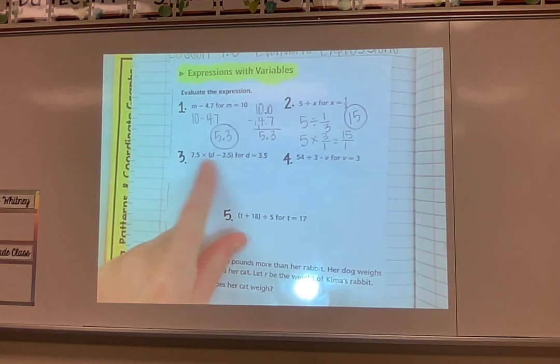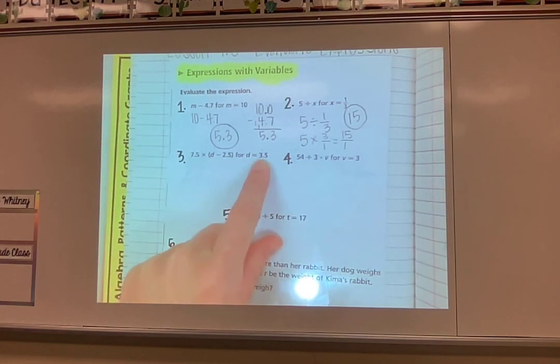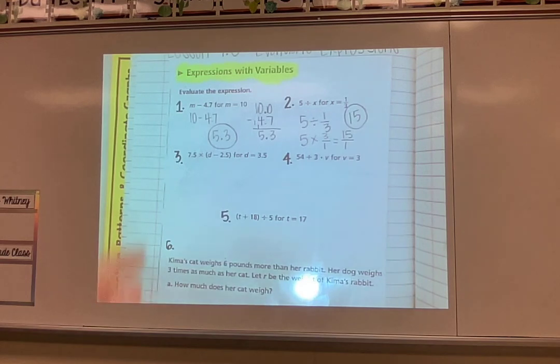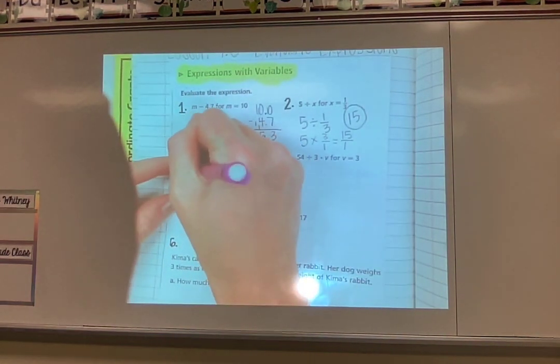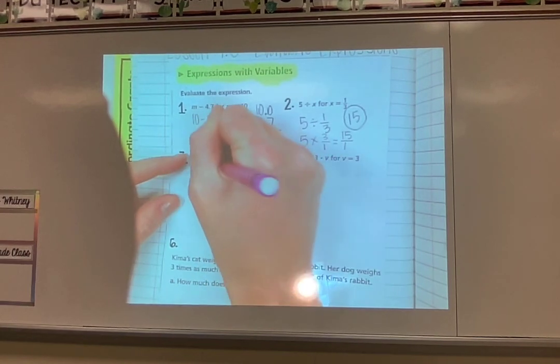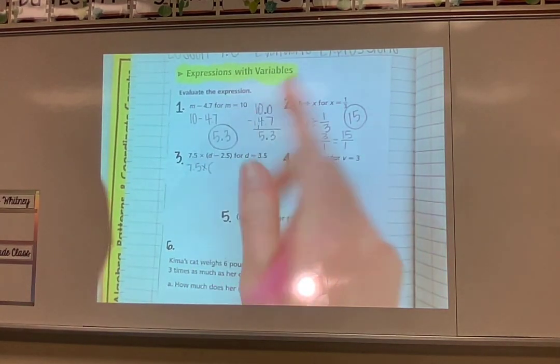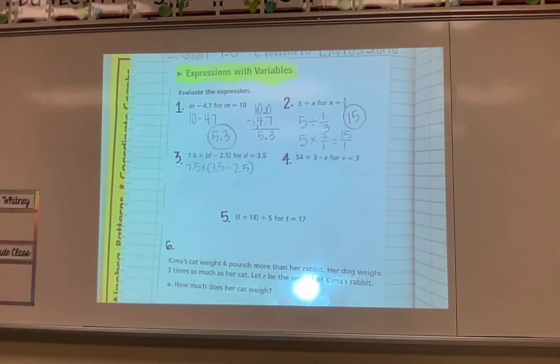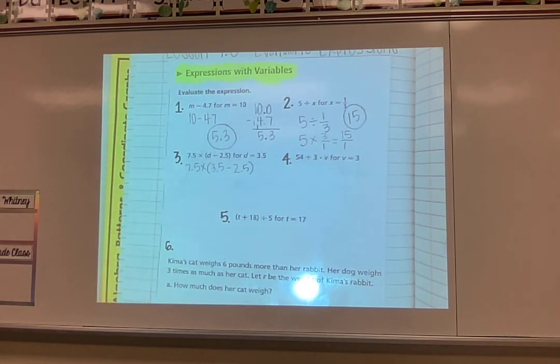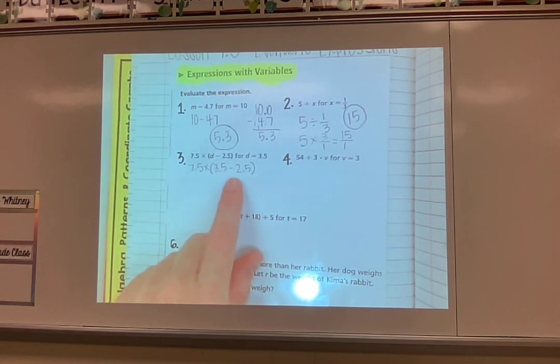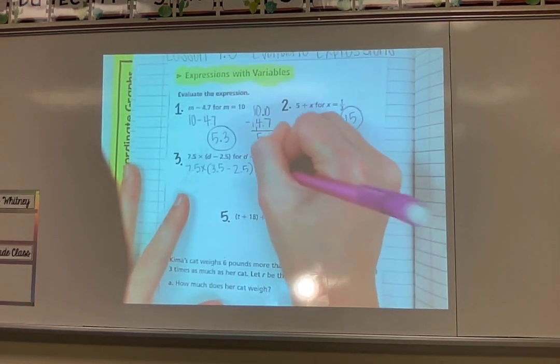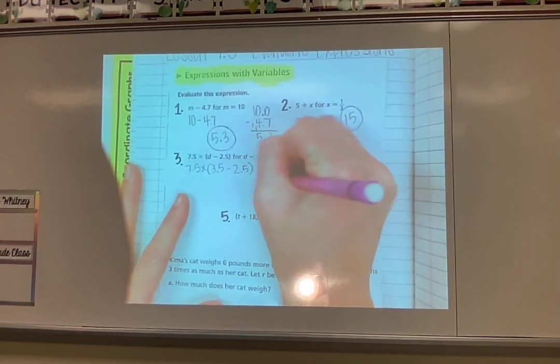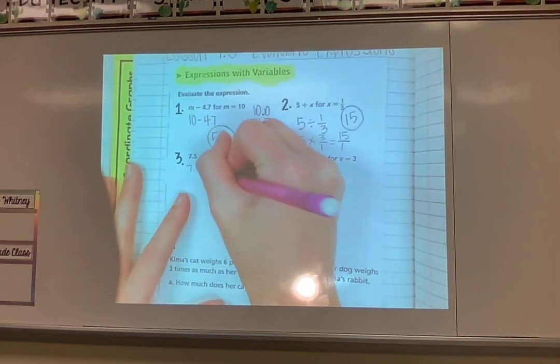Number 3, here is my expression. And I'm using d equals 3.5. So I'm going to plug that in. But first, I'm just going to start copying 7.5 times. And then when I get to d, instead of writing d, I'm going to plug in my number: 3.5 minus 2.5 in parentheses. Now, this one's a little bit longer. It has a couple of things going on. So I have to remember my order of operations. Please excuse my dear Aunt Sally means I have to do my parenthesis first. So 3.5 minus 2.5. That would give me 1.0. So that part is 1.0.